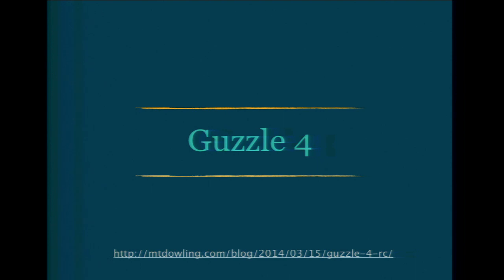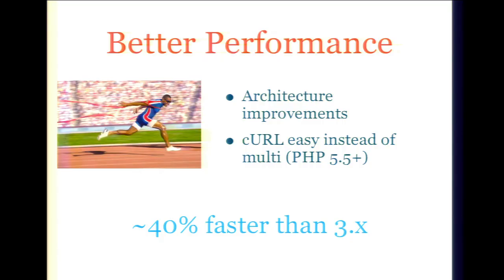Guzzle 4 was released and it's a pretty big milestone. Drupal is actually using Guzzle 4 now — they initially adopted Guzzle 3, but I addressed concerns like curl being a requirement. I removed curl as a requirement so you can implement your own HTTP adapter. It also has better performance: I went through basically every line of code and rewrote or updated it to make it better architected and more testable. I removed features that were there for backwards compatibility or should be at a higher level. In Guzzle 4, we use curl easy handles by default for persistent connections if PHP 5.5 is available; otherwise, it still uses curl multi. If you're on PHP 5.5, it's about 40% faster when sending requests serially.